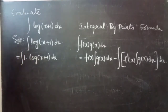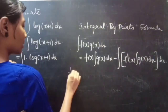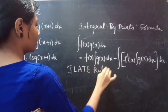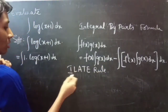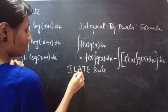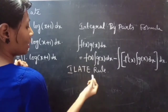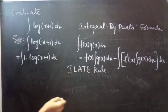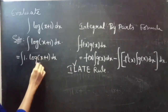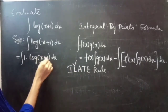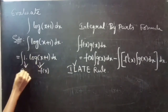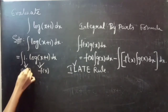We will use the ILATE rule — Inverse, Logarithmic, Algebraic, Trigonometric, and Exponential. Since logarithmic comes first, we will consider log(x+1) as our f(x) and the remaining 1 will be our g(x).